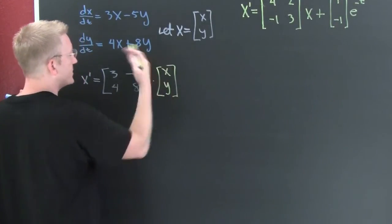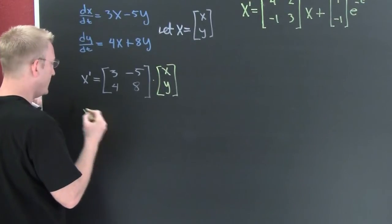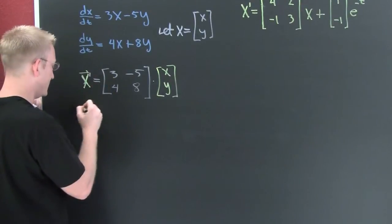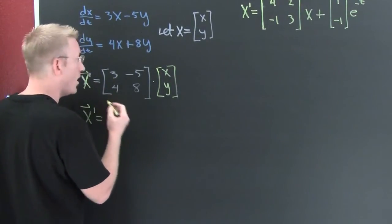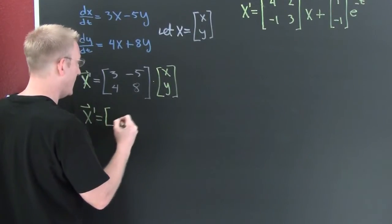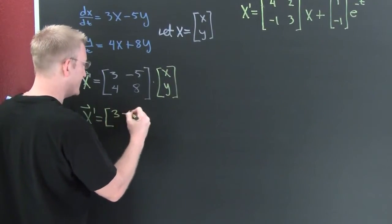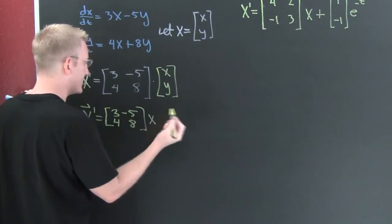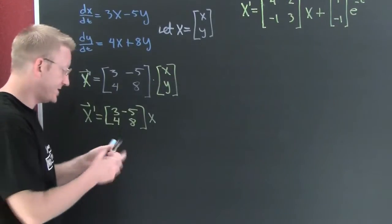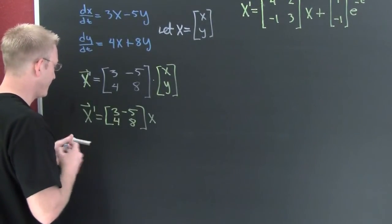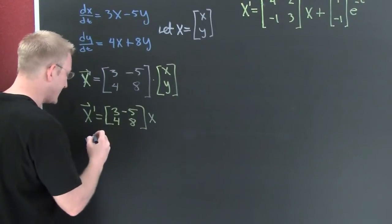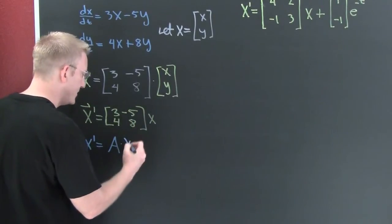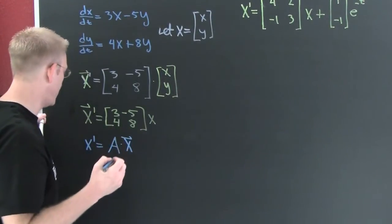Check the multiplication. All right, so then x prime. Now note, mind you, that these x's are vectors times 3 minus 5, 4, 8, x. Very nice. And then we see that we do have that system in the form. x prime, x prime is equal to our coefficient matrix times our solution.